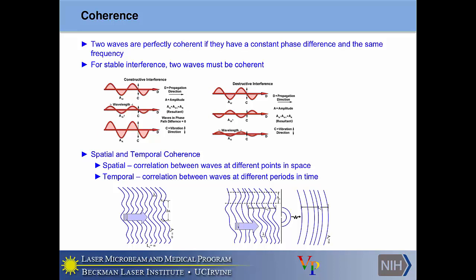Constructive interference and destructive interference — something we probably all learned in high school or college physics. If two waves have the same frequency and zero phase difference between them, they will have constructive interference in which the sum of the two waves is larger than each individual wave. For destructive interference, the sum of the two waves is less than the amplitude when they're 180 degrees out of phase. There are two types of coherence: spatial coherence and temporal coherence.